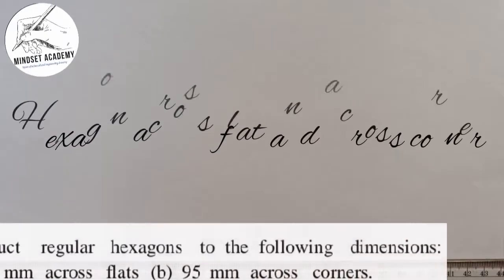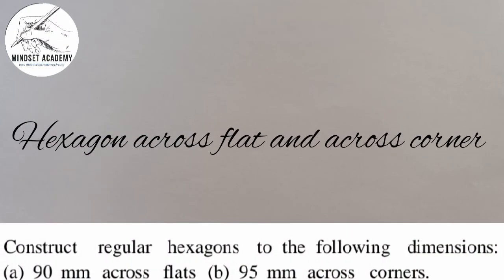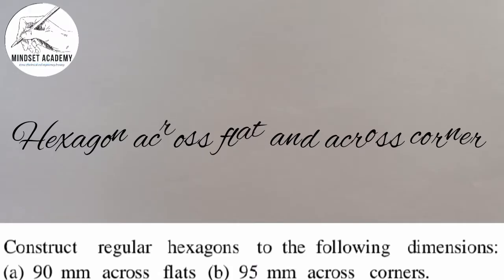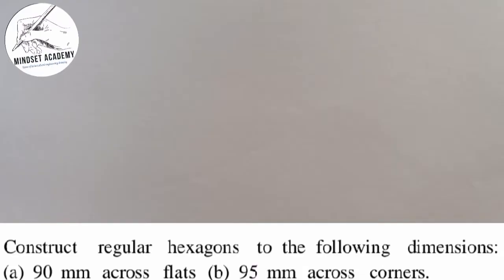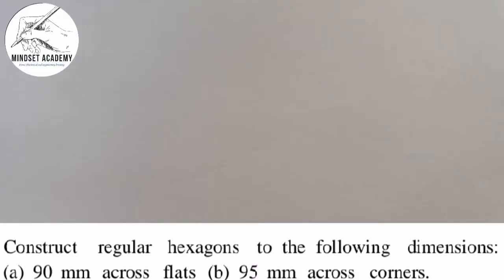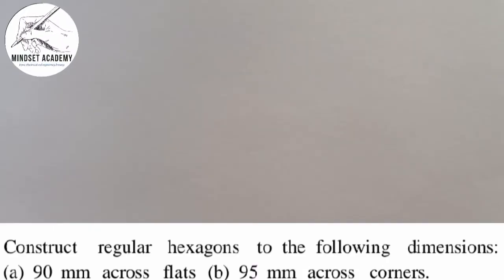Welcome to my channel. In this tutorial we'll be solving another problem involving geometrical construction where we are told to construct a regular hexagon to the following dimensions: A - 90 millimeter across flats, B - 95 millimeter across corners. So let's start with both of them, doing them simultaneously.